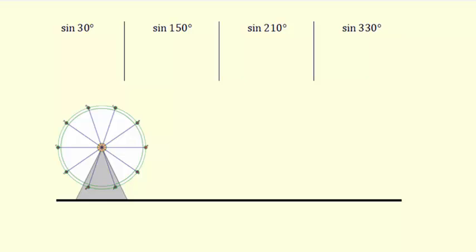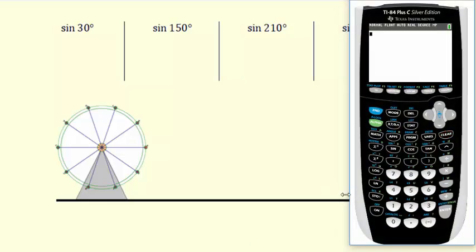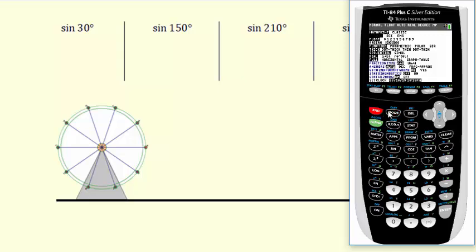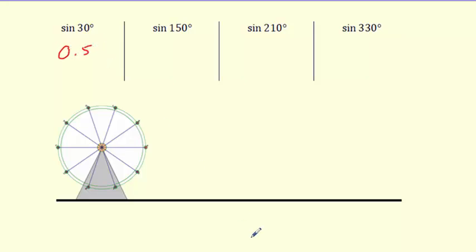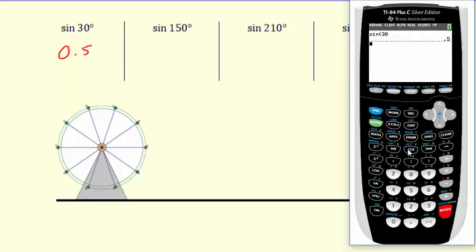I've got some different angles here and we can type them in the calculator. I just want to check my mode and make sure I'm in degrees. So what is the sine of 30? I get 0.5.